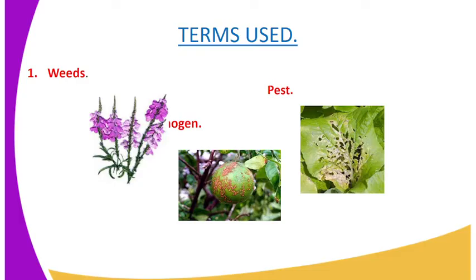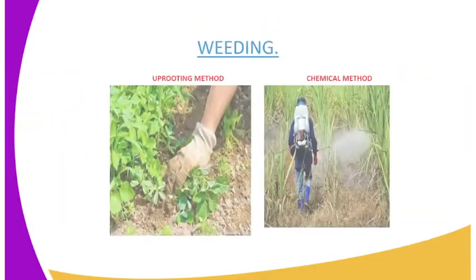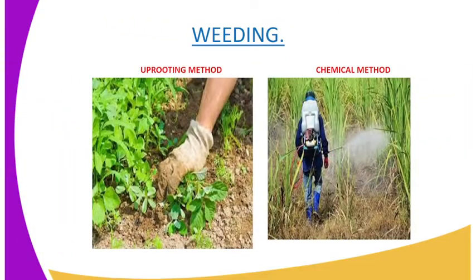Moving on to weeding — weeding is the control of weeds in the farm, because weeds compete for valuable nutrients together with the intended crops. There are several methods used. One method is the uprooting method, where you use your hands.